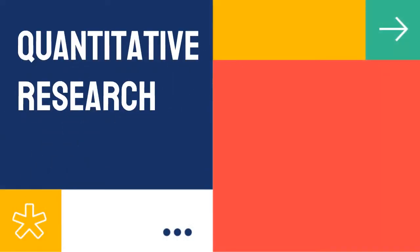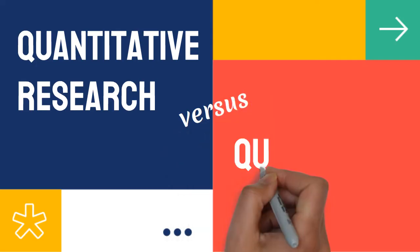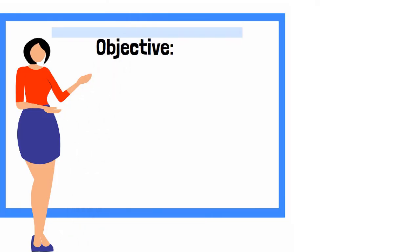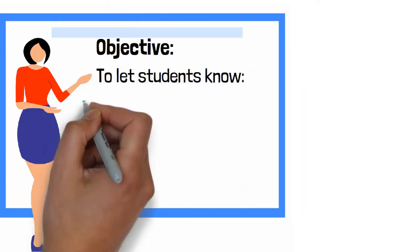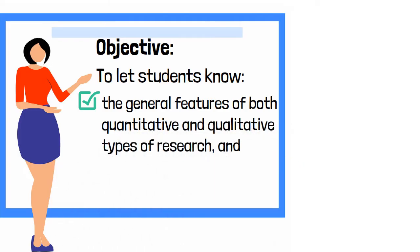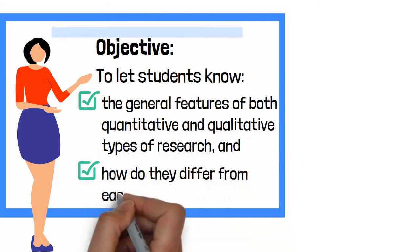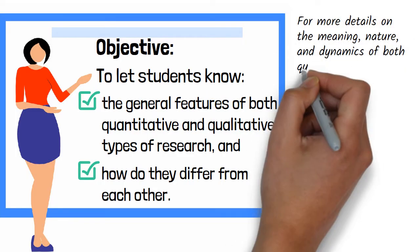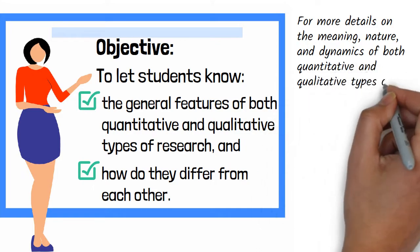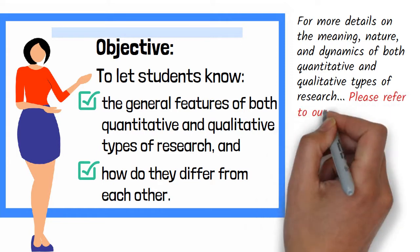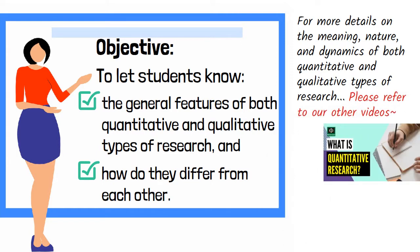In this video, we will discuss very briefly the main differences between quantitative research and qualitative research. Our intention here is just to let students know the general features of both quantitative and qualitative types of research and how they differ from each other. For more details on the meaning, nature, and dynamics of both types, including their specific methods in gathering data, please refer to our other video lectures on this topic.